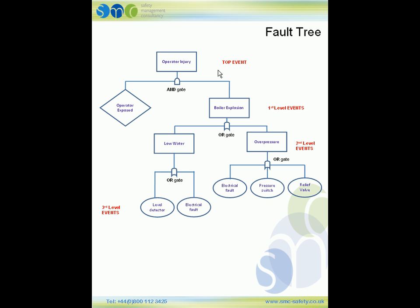So that is what your fault tree should look like. The main thing to remember is to make sure you have the operator exposed in the first level event. Now we apply the frequencies from the table. For condition A — the low water failure — the frequency for the level detector is 0.1 per year and for the electrical fault is 0.05 per year. Because this is an OR gate, we add the frequencies: 0.1 plus 0.05 gives a frequency of 0.15 per year.